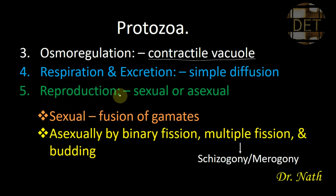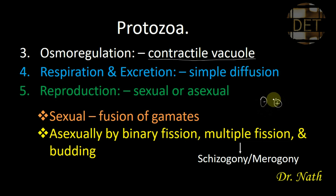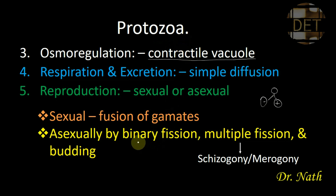The last feature is reproduction. Reproduction in Protozoa can be sexual or asexual. Sexual reproduction is by fusion of gametes — a male strain and a female strain fuse to form a zygote, which develops into a new organism. Asexual reproduction is by binary fission, multiple fission, or budding. Multiple fission is also known as schizogony or merogony.